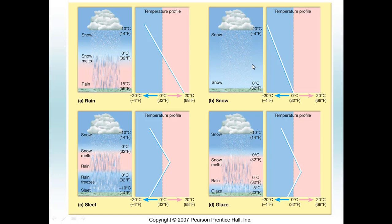Rain and snow are pretty straightforward. With rain, snow falls in the upper parts of the atmosphere but as it gets closer to the warmer surface, all the snow melts and falls as plain rain. With snow, precipitation is falling in the upper parts of the atmosphere and the entire column of air from the cloud all the way down to the surface is cold enough to fall as snow throughout. You can see the differences between these two atmospheric soundings clearly.